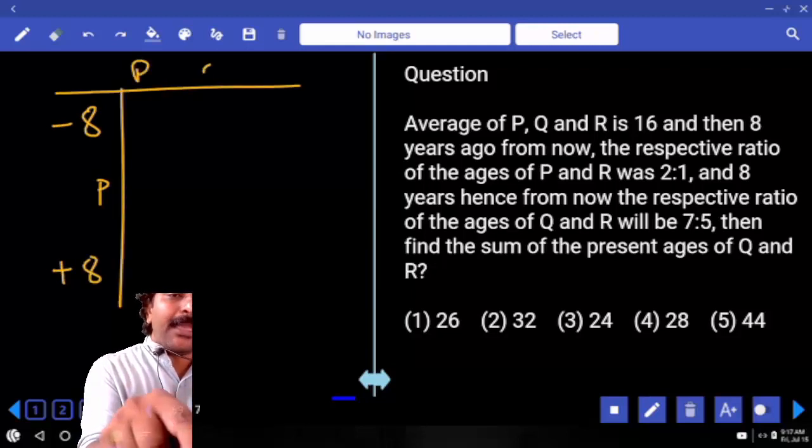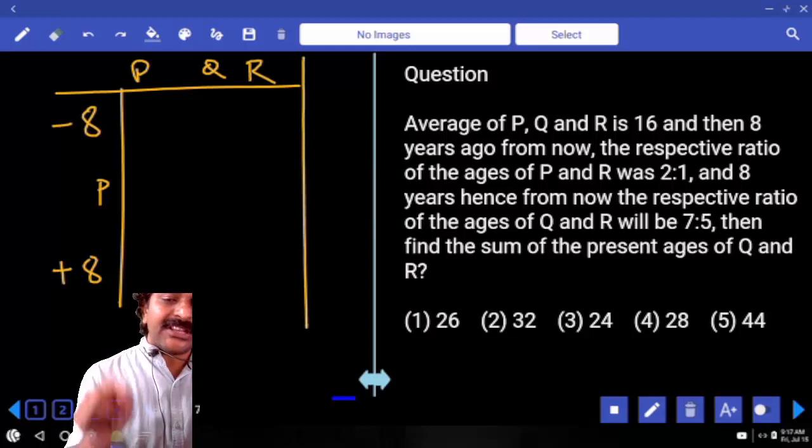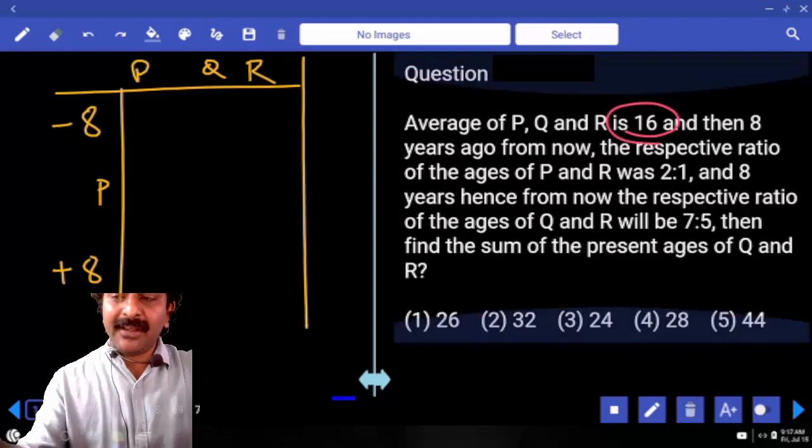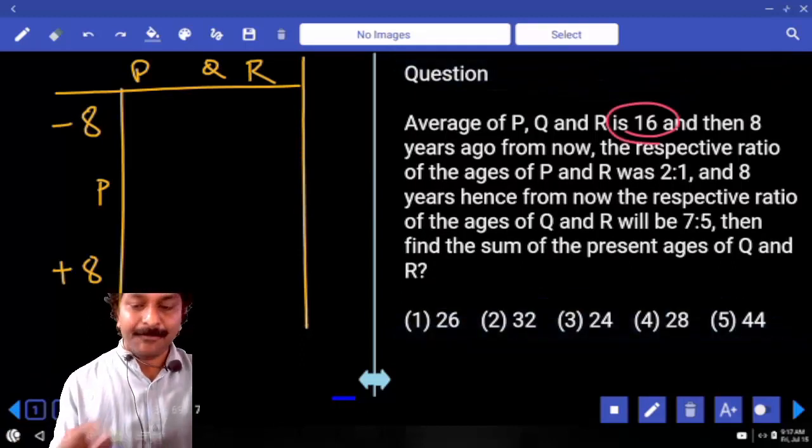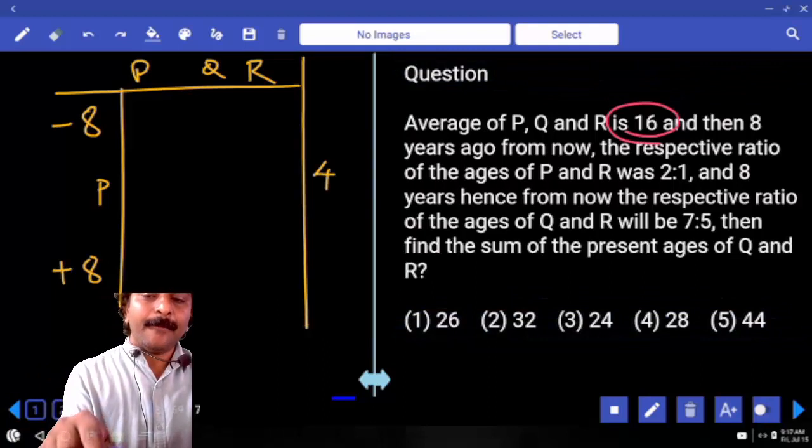We have 3 members: P, Q, R. With respect to their present age, we were given average which is 16. Then sum is going to be 48.